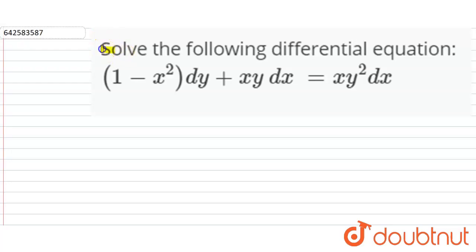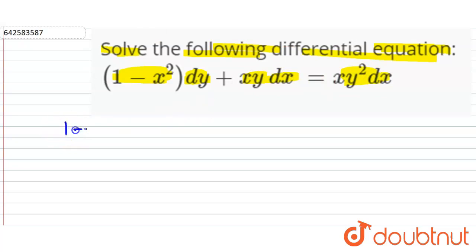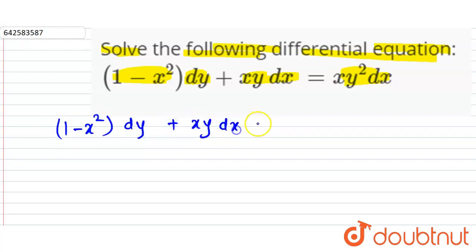Hello friends, the question is: solve the following differential equation. The equation given is: (1 - x²) dy + xy dx = xy² dx.